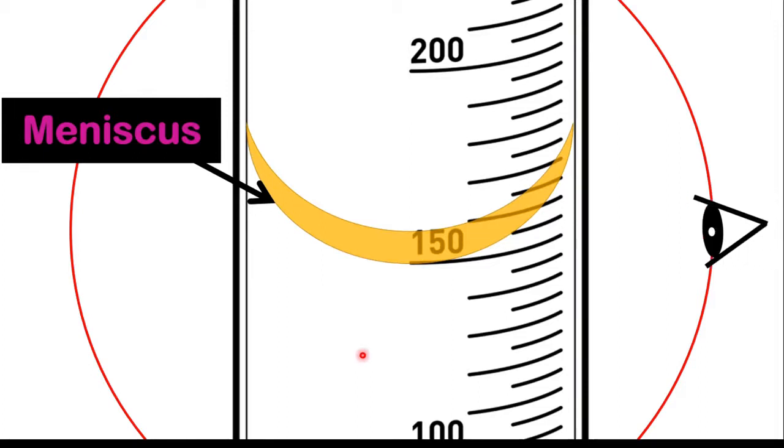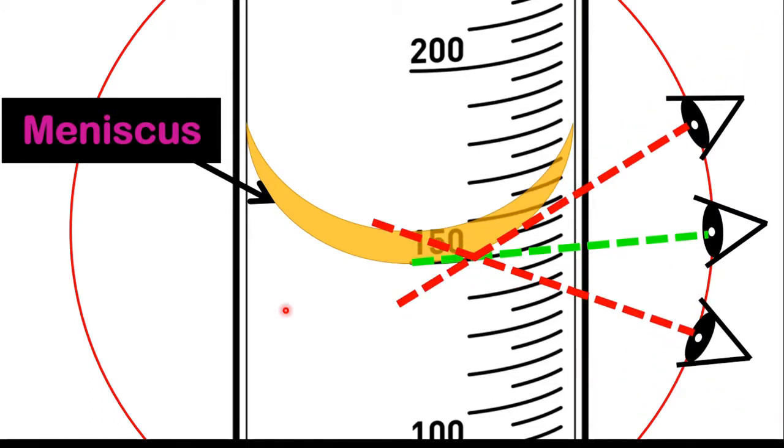And you also want to read this at eye level. So make sure you're at eye level to the bottom of the meniscus to check off your volume of liquid. You do not want to measure this from top or from bottom. Those two angles will be incorrect because they will lead to error that is known as parallax error. So you want to avoid that. Always try to keep your measuring cylinder on a steady surface and measure at eye level.